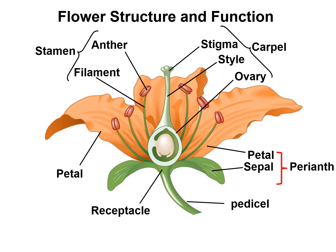The next part is the pistil, which we also call carpel. It is the female reproductive structure of the flower. It consists of stigma, style, and ovary. The surface of stigma is sticky, which helps it to catch the pollen. The style supports the stigma and connects to the ovary. The ovary holds the ovules, which we also call the female gametophytes. When the ovules are fertilized, the ovules become the seed and the ovary becomes the fruit.